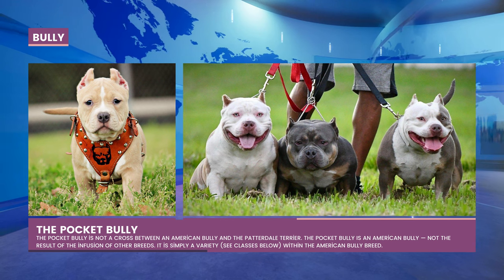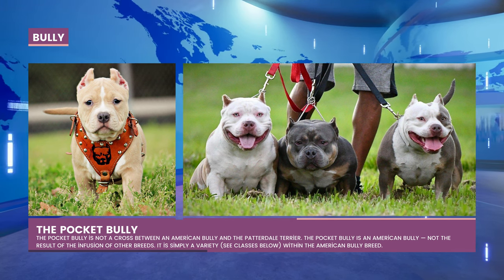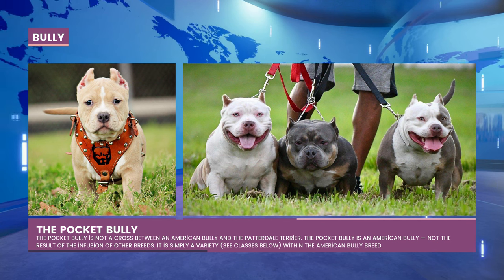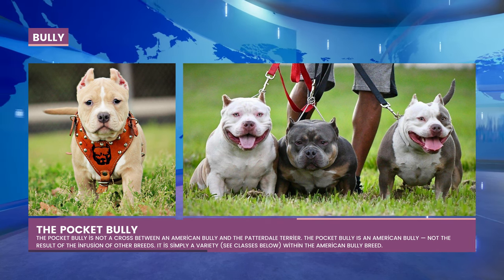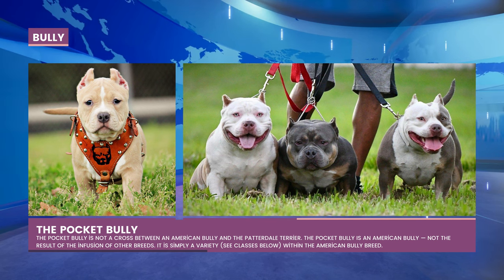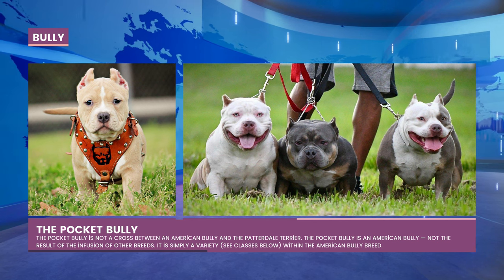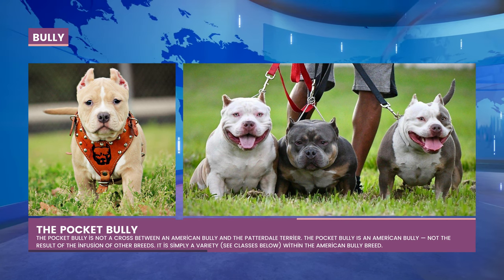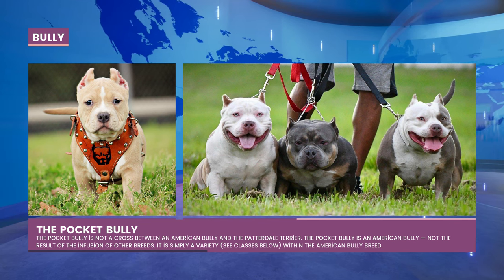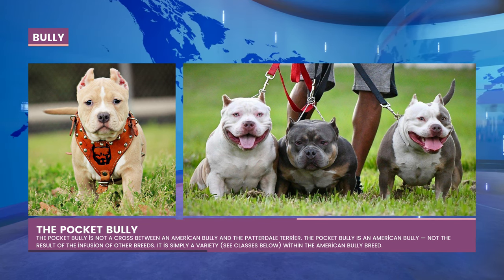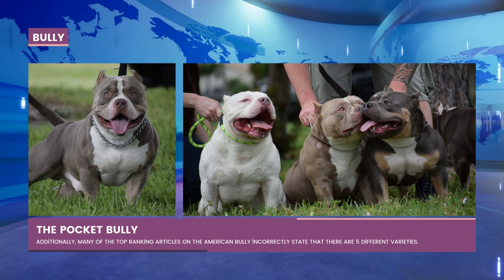The pocket bully was not created through the blending of other breeds. It is an American Bully — it is merely a variety of the American Bully breed. The American Bully varieties, also referred to as classes, are classified according to adult height, with the pocket variety being smaller than the standard. The only difference between the pocket bully and the American Bully or any of its varieties is adult height. There are no other breeds that make up the pocket bully.